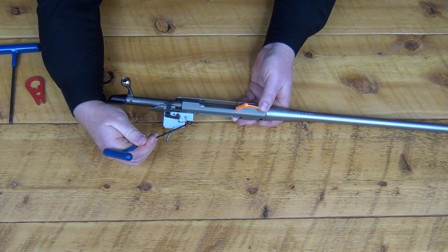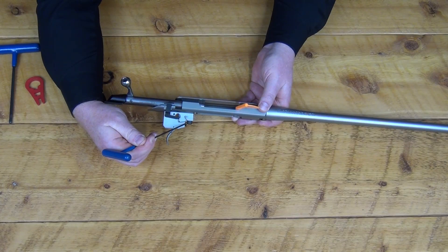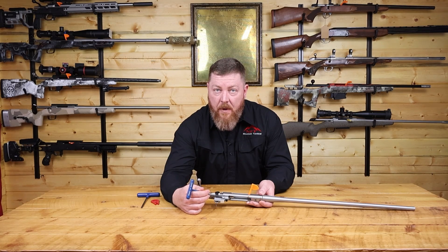You have your trigger weight adjustment screw right here. The trigger adjusts from a two pound to a seven pound pull weight.